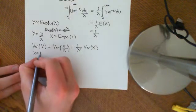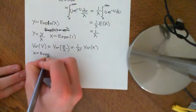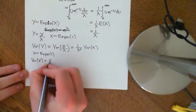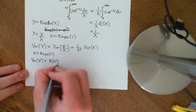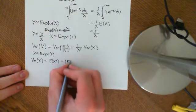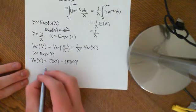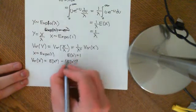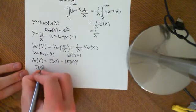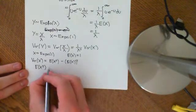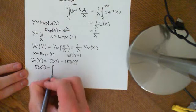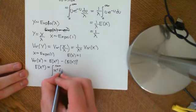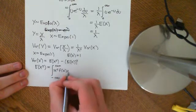If x is exponentially distributed with parameter 1, then Var(x) equals E[x²] minus (E[x])². We know E[x] equals 1, so what we need to compute is E[x²]. Applying the law of the unconscious statistician, this is the integral from negative infinity to infinity of x squared times the PDF of the standard exponential distribution.